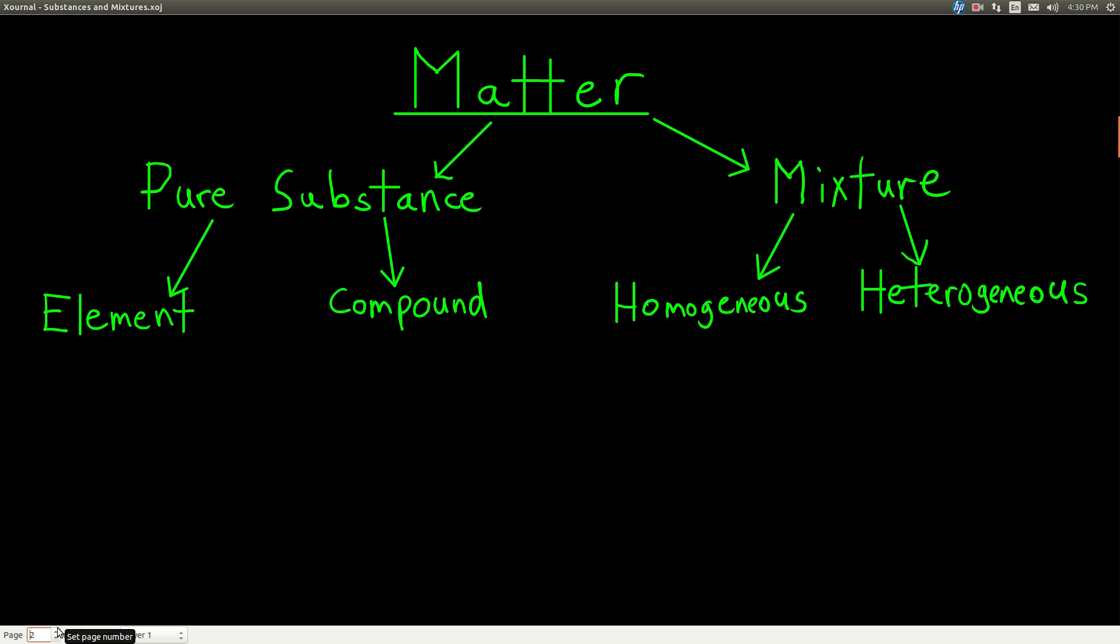A mixture has two or more things, two or more elements or compounds in it. That mixture can be what we call homogeneous or heterogeneous, and we'll distinguish those in just a moment.